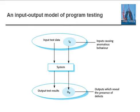The input-output model for program testing: a test case consists of input test data, which may cause anomalous behavior in the system. The system then produces output test results. This describes when two things happen in a test run.